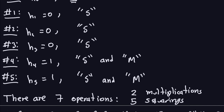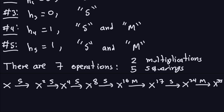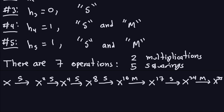If you go ahead and count, you will see that is correct — that corresponds to x to the 35. Now in this sequence I'm going to write down, I'm omitting the modulo, but it is there. We start with h0, just x, and then we square, square, square — so we get up to x to the 8 — and then we square and multiply, then square and multiply, and finally arrive at the answer.